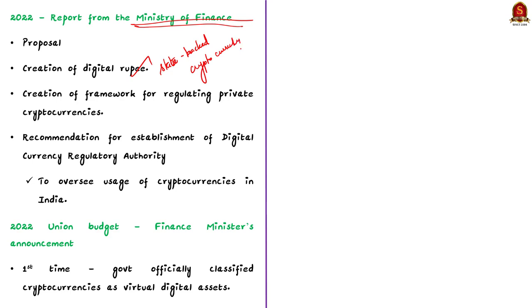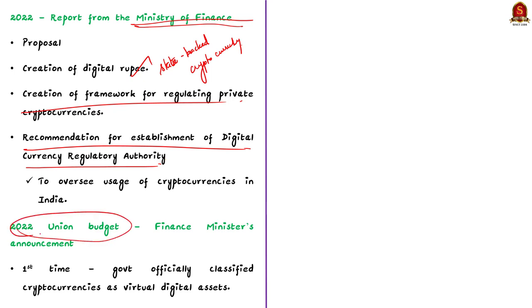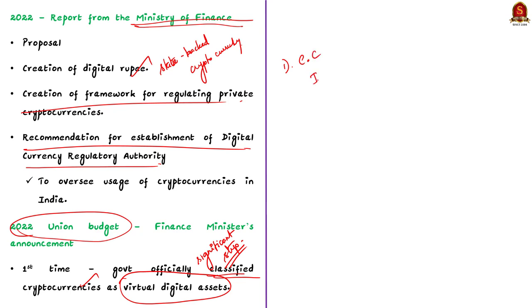The report also recommended the establishment of a digital currency regulatory authority to oversee the use of cryptocurrencies in India. Then in the 2022 Union Budget, the Finance Minister announced significant changes to the treatment of virtual and digital assets including cryptocurrency. For the first time, the government officially classified digital assets, including cryptocurrency, as virtual digital assets — a significant step in providing clarity to investors and entrepreneurs. In this discussion, we saw about the basics of cryptocurrencies and India's stand on cryptocurrencies.